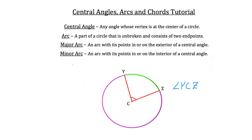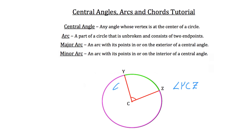And the minor arc is an arc with its points in or on the interior of a central angle. The interior of this central angle is everything inside the angle right here, and the exterior is all of this that's outside of that central angle.